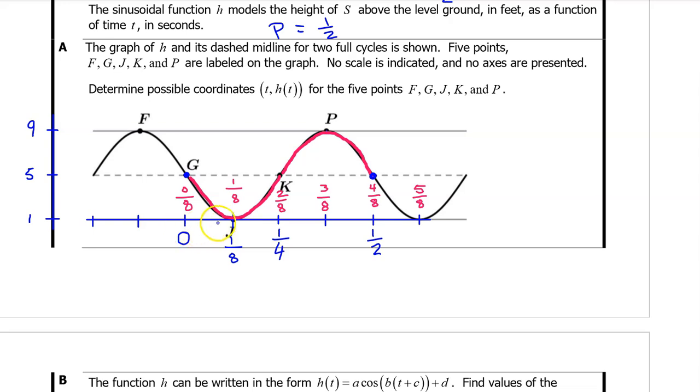This is zero eighths. This is one eighth, two eighths. The next input value is three eighths. Then we have four eighths. And the last input value is five eighths. Going back to t equals zero, if we count backwards one eighth, this input value is negative one eighth. We now have the input values and the output values for all five points. So we can begin listing off the coordinates.